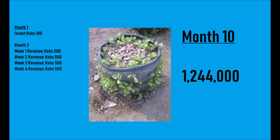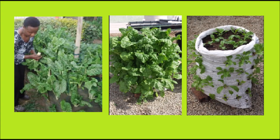I challenge you to do your own calculations after taking this video — sit down with a pen and paper and prove me right. If you started with 100 shillings and every time you sold your produce you reinvested everything right back into the business, at the end of month 10 — that's less than a year — you would have one million, two hundred and forty-four thousand shillings, or twelve thousand four hundred and forty US dollars. The power of compound interest.